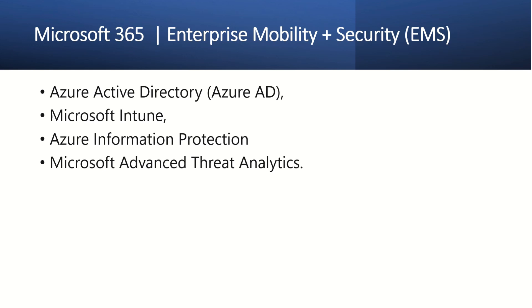M365's Enterprise Mobility and Security is a security platform. It includes Azure Active Directory, Microsoft Intune, Azure Information Protection, and Microsoft Advanced Threat Analytics. These services allow you to introduce the enterprise at any level and at any scale, which is why M365 was introduced.